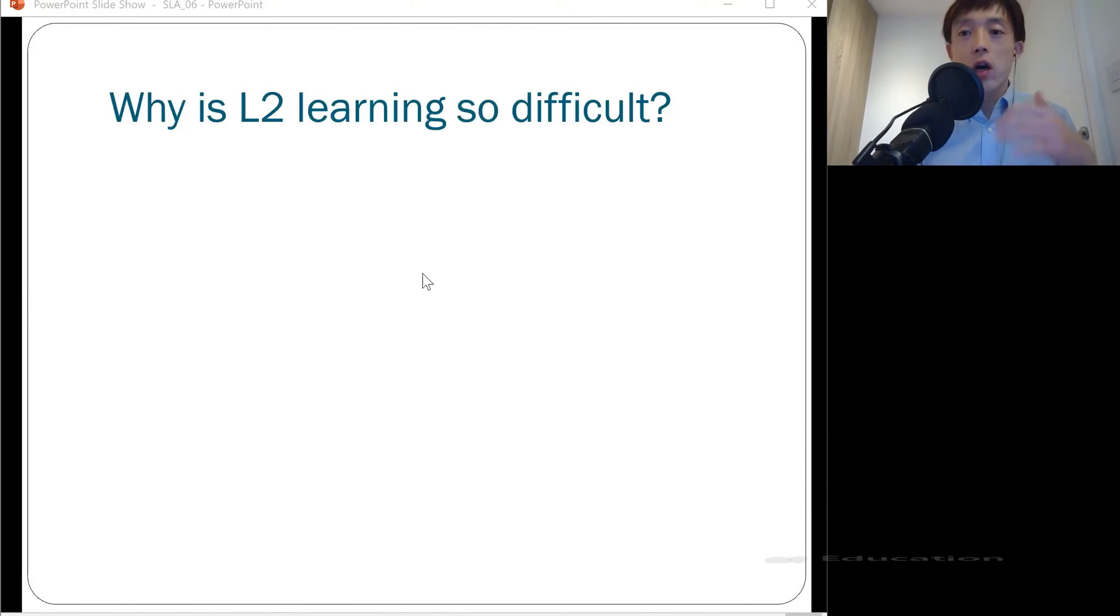In the previous video, we talked a lot about why it is so difficult to pick up second language. One main source of difficulty lies in L1 influence, especially when you have started learning second language after puberty, because by puberty, your L1 system becomes more stable, generalizable, and robust, meaning your L1 becomes more adult-like.